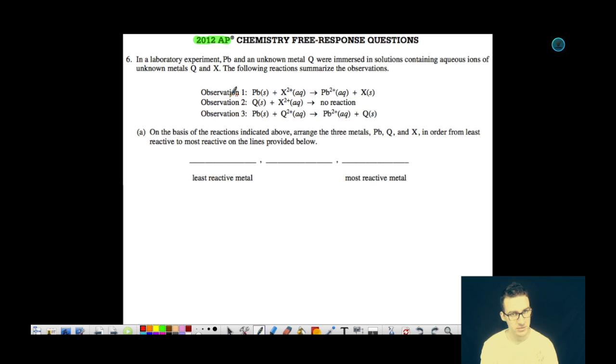Observation one, observation two, observation three. On the basis of the reactions indicated above, arrange three metals P, Q, and X in order from least reactive to most reactive. In observation number one we see that lead will replace our aqueous metal X ion and the reaction will proceed. So this tells me that lead is more active than that unknown metal X.